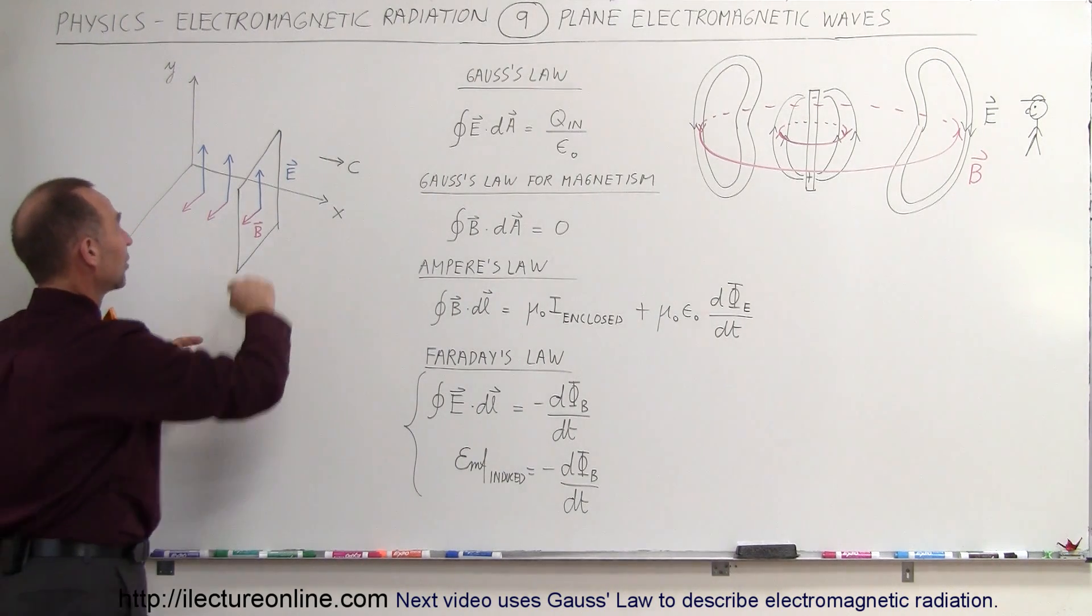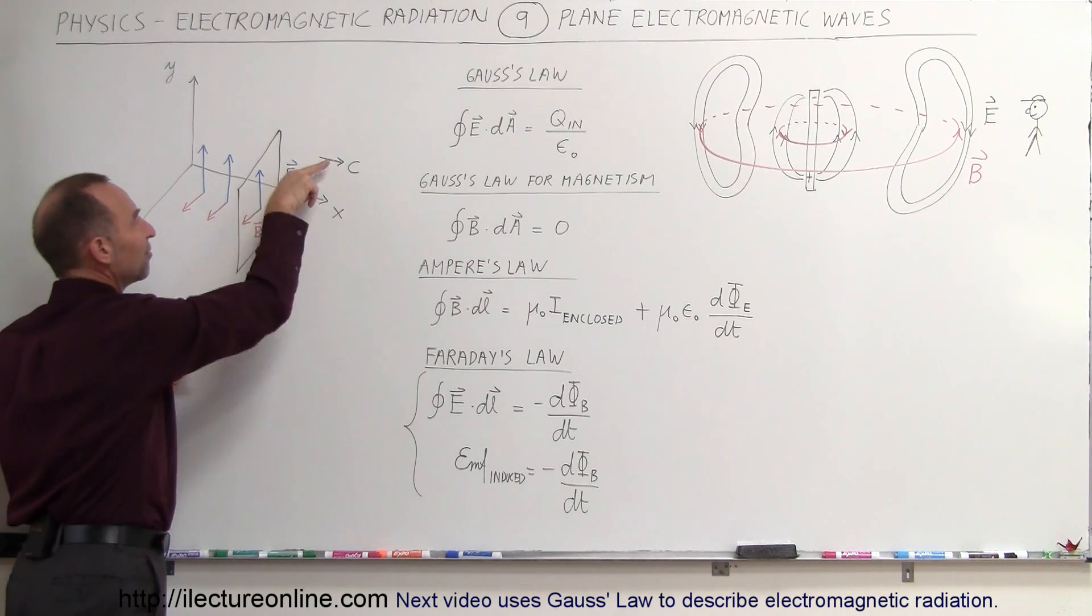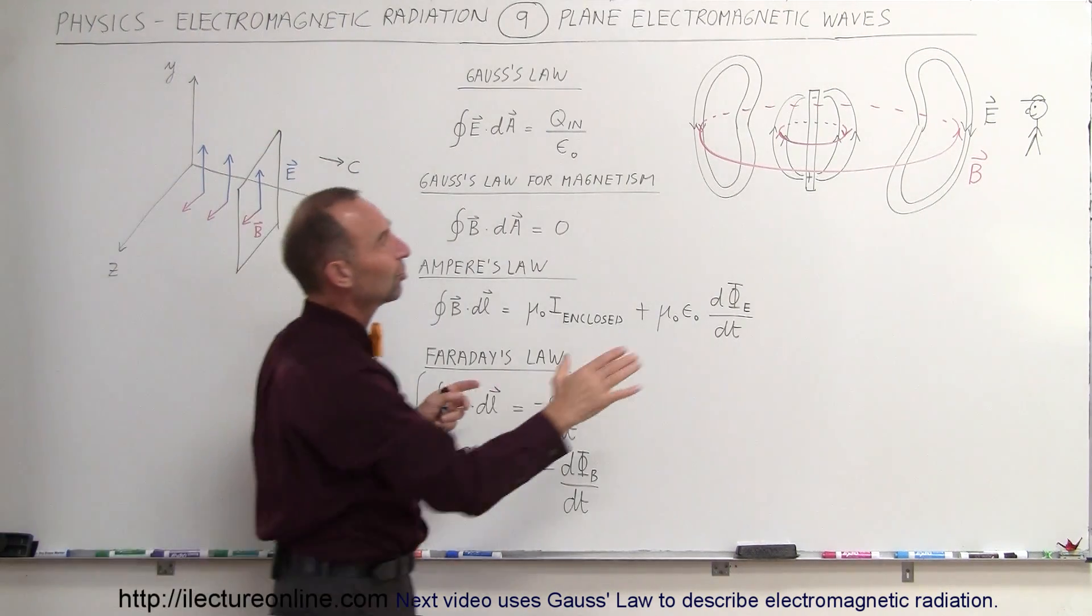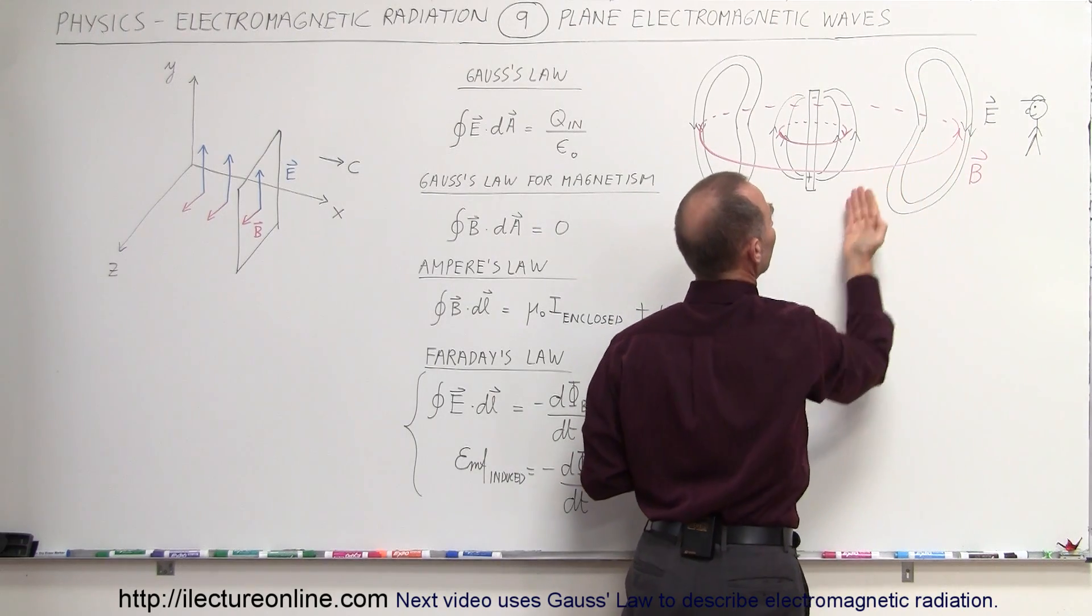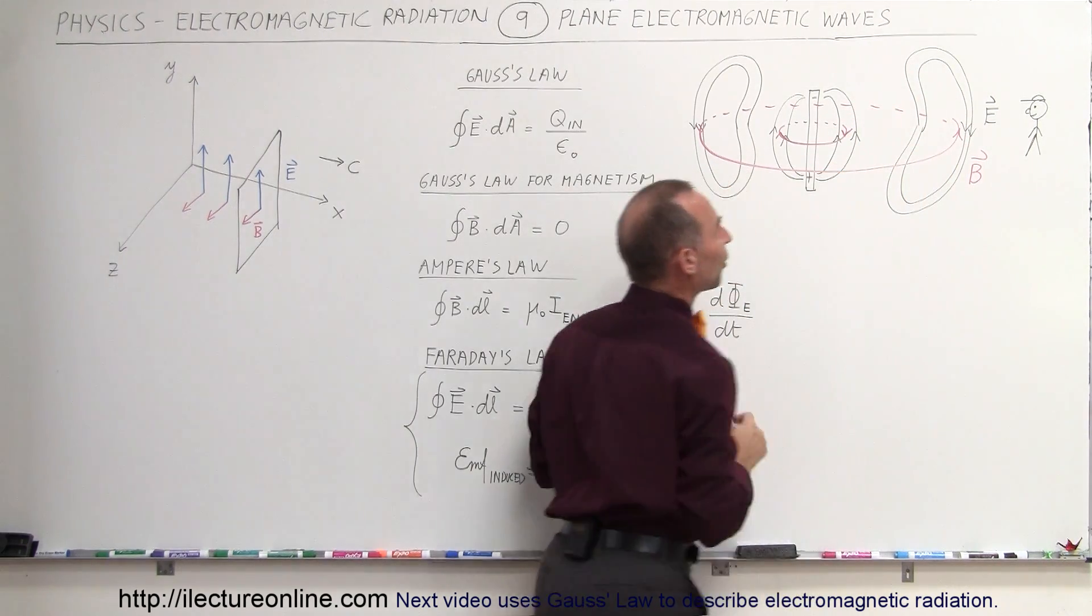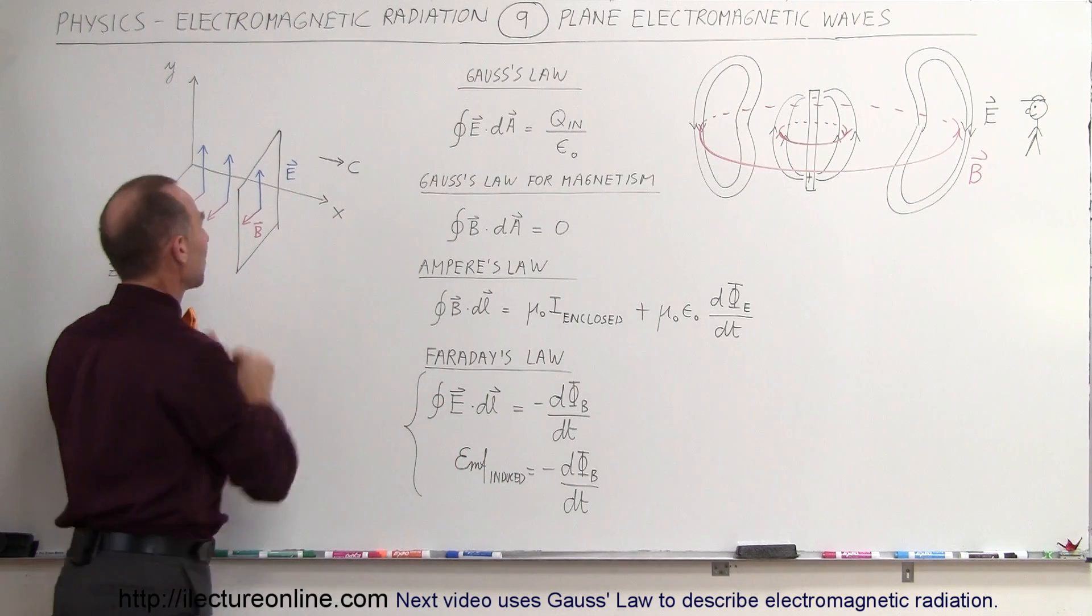So as the electric field goes up, B field goes this way. As electric field goes down, B field will go in the opposite direction, kind of what you see in here where the electric field is down, B field is in that direction; electric field is up, B field is out of the board. So you can see that it's in line with what we have over here.